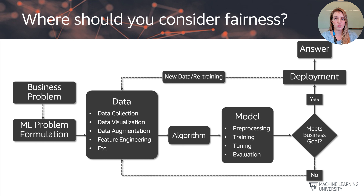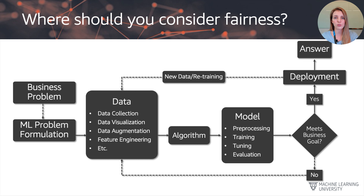One thing to keep in mind is that a model can get stale over time. The world around us does evolve and change, so there will come a point where retraining is necessary. If model evaluation shows performance is not good enough and we don't meet the goal, we need to go back to the problem formulation, collect new data, reselect or try a different algorithm, then train, tune, and evaluate again. This is quite an iterative process with many possible model versions.